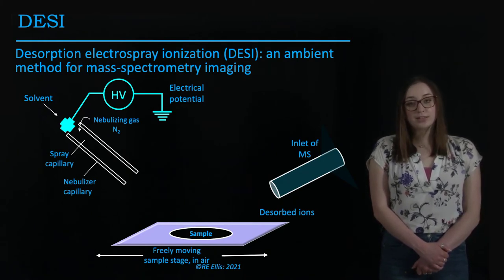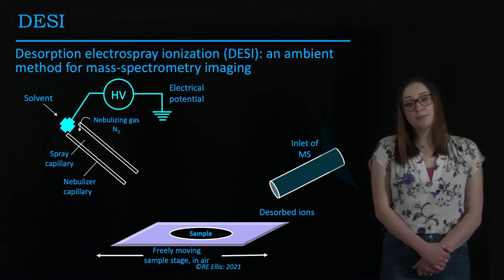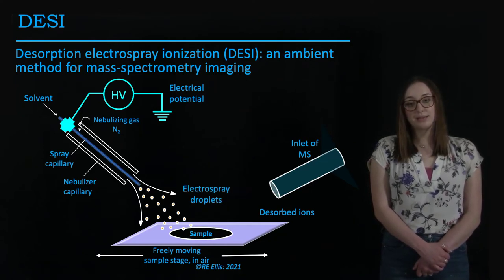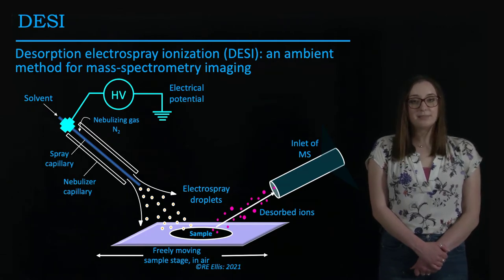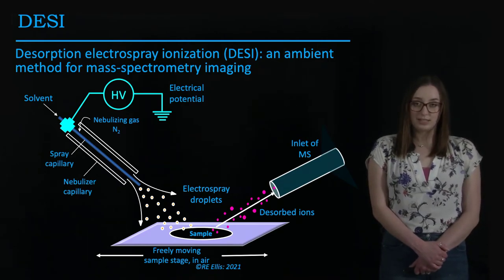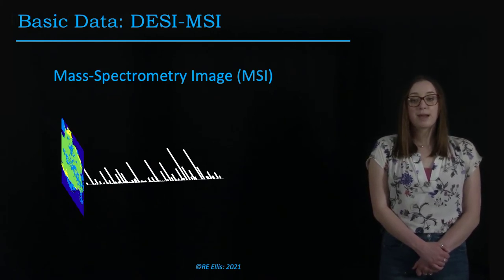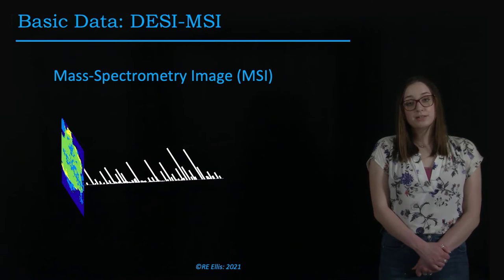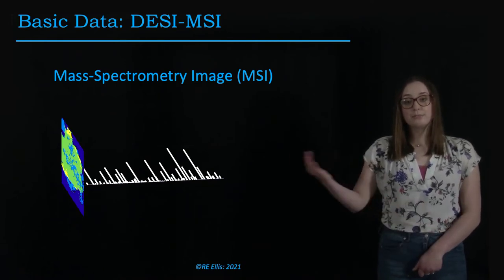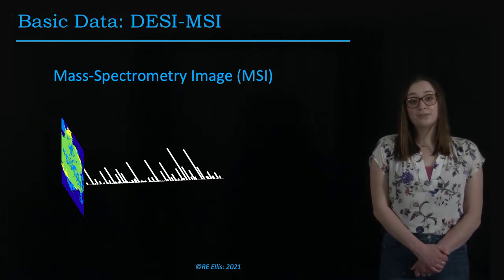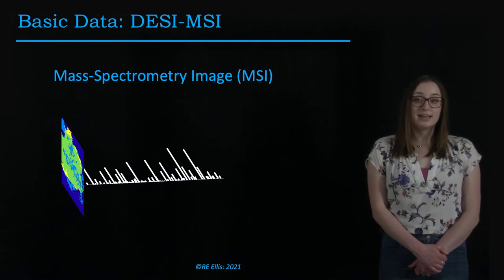DESI is an ambient, non-destructive form of mass spectrometry that detects small metabolites within the tissue. It works by spraying electrospray droplets onto a location of the tissue sample and collecting the desorbed ions into the mass spectrometer. Each location is 100 microns by 100 microns in size — let's refer to these as pixels. The final result is a three-dimensional tensor known as a mass spectrometry image, or MSI. The first two dimensions give you the pixel location on the tissue sample, and the third dimension tells you the relative abundance of ions at that pixel location.